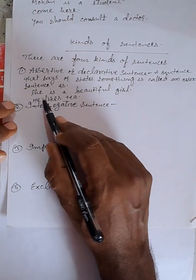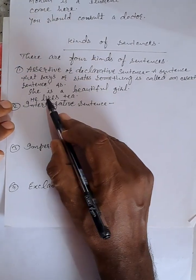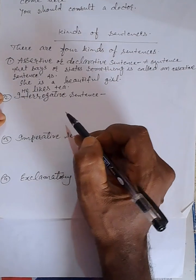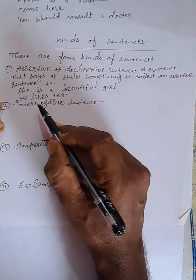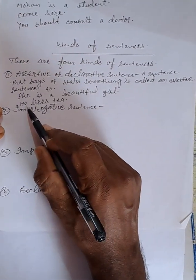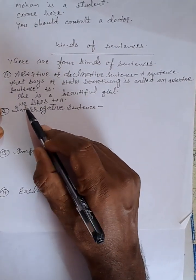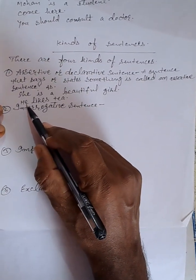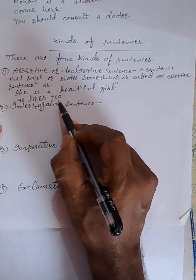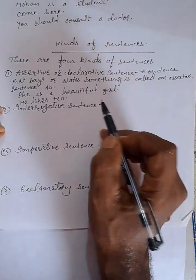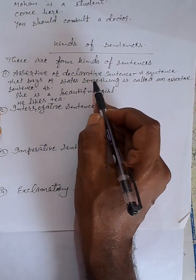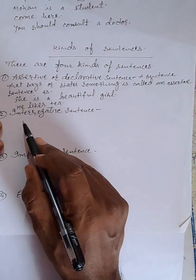For example: 'She is a beautiful girl' — this is a declaration, and 'He likes tea' — the speaker says something. So this is an assertive or declarative sentence.